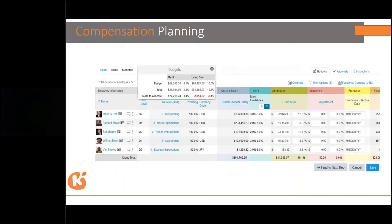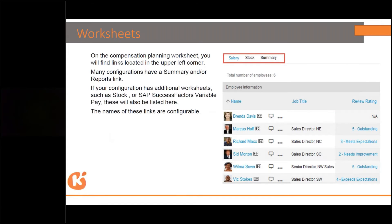In compensation planning, you can see how to plan the budget — whether it's merit or lump sum. When the budget exceeds a particular amount, the system starts throwing an issue. In that case you have to bring the compensation lower than the defined amount. For example, the budget shows 80,470 but they have utilized 81,000 — a difference of 914 dollars — so they have to reduce this amount by 914 dollars.